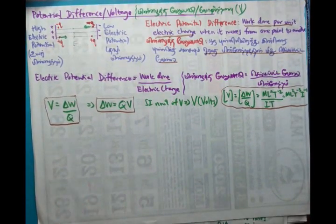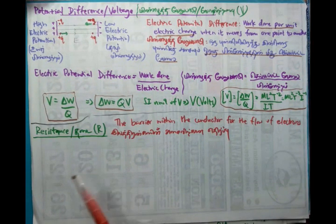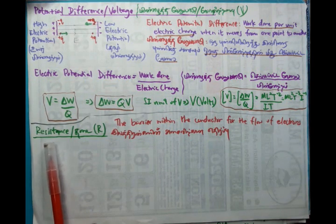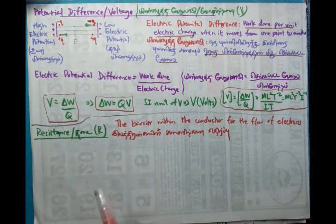This is the normal, very brief introduction to potential difference or voltage. The next physical quantity we can learn is resistance. So what is resistance? Resistance means the barrier within the conductor for the flow of electrons.